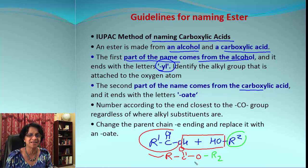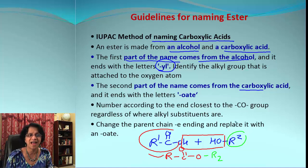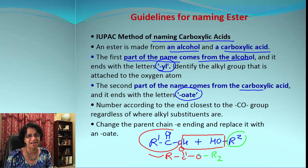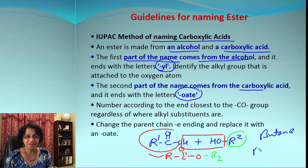For example, ethanoic acid or propanoic acid — we simply end that with '-oate'. So if this is butanoic acid, you end up getting butanoate. That's the ending we add for the ester.